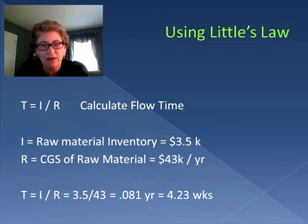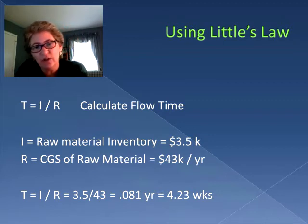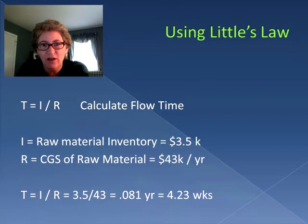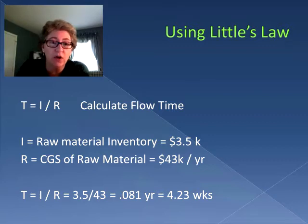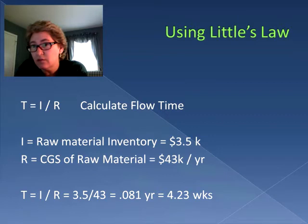Now a lot of people can't get their heads around 0.081, so we're going to convert it to weeks. There are 52 weeks in a year, so we multiply 0.081 times 52 and that gives us 4.23 weeks. So what we're saying here is a dollar of raw material entering into the process will sit there for 4.23 weeks by the time it gets out of the process.